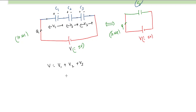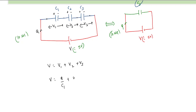Now recall that Q = C × V, or equivalently V = Q / C. Therefore V1 = Q / C1, V2 = Q / C2, and V3 = Q / C3. There is no need to write Q1, Q2, Q3 because the charge is the same value across each capacitor in series.